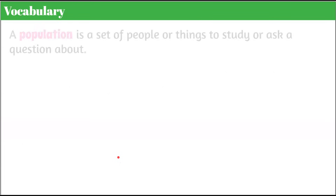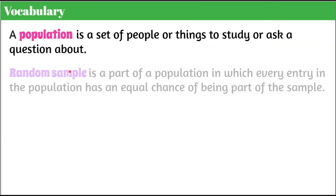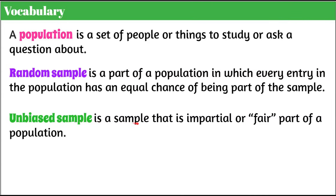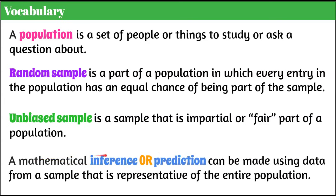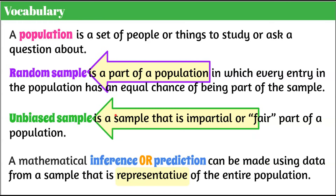Here's our vocabulary before we begin. A population is a set of people or things to study or ask a question about. A random sample is a part of a population in which every entry has an equal chance of being included. An unbiased sample is an impartial or fair part of the population. A mathematical inference or prediction can be made using data from a sample that is representative of the entire population, meaning we want it to be random and unbiased.